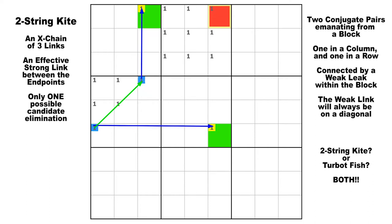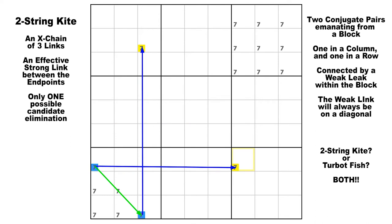Some people might argue this configuration should be called a turbo fish and not a two-string kite, and that the term two-string kite should be reserved for when the two conjugate pairs actually crisscross in the connecting block. But really, as long as the two weakly-linked candidates lie in the same block, you can still call it a two-string kite. It really doesn't matter — turbo fish, two-string kite, or simply an X-chain.